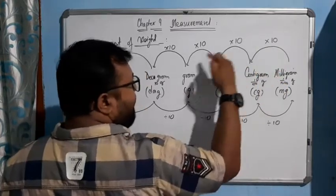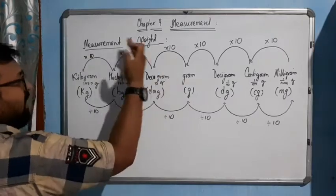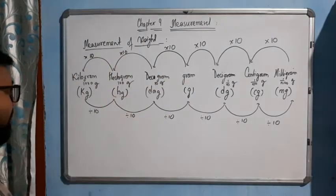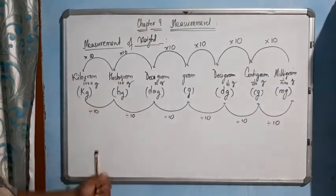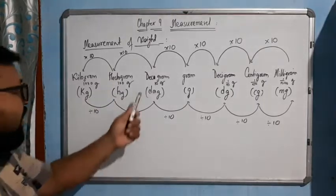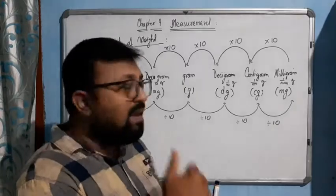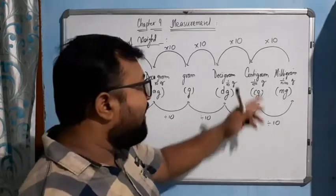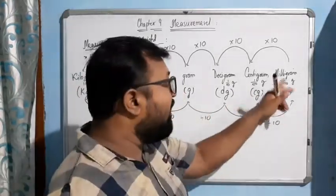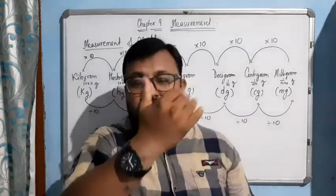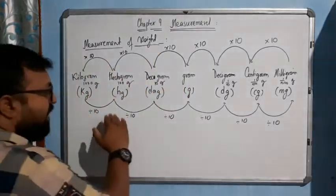So 1000 milligrams gives you one gram, and 1000 grams gives you one kilogram. To summarize: kilo represents 1000, hecto represents 100, deca represents 10, deci represents 1/10, centi represents 1/100, and milli represents 1/1000.